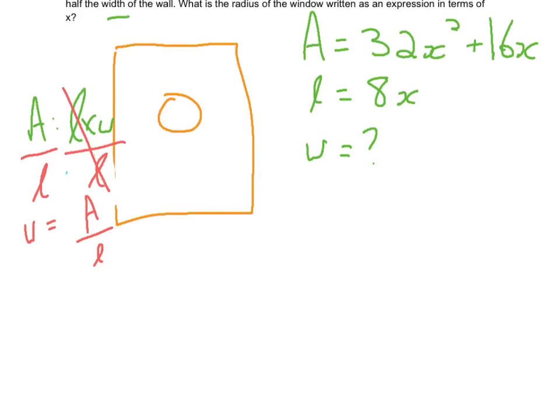So we're given what the area is. The area was 32x squared plus 16x. And we're given what the length was, 8x. So let's solve for what the width is going to be.